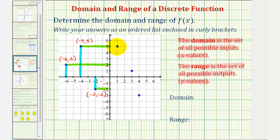And then we have the point (1, 5). So one is in the domain, and five is in the range.